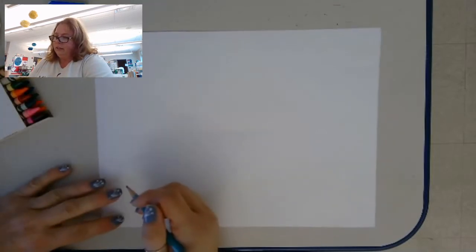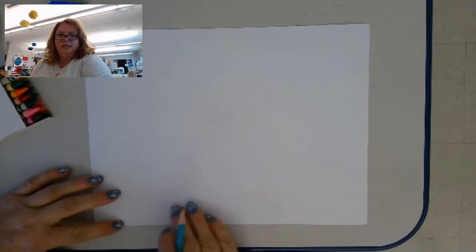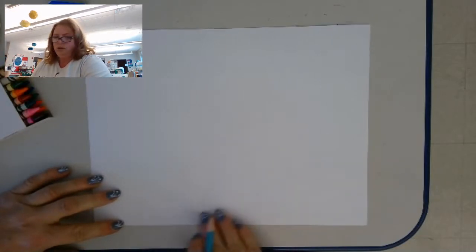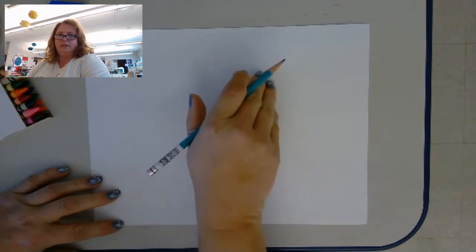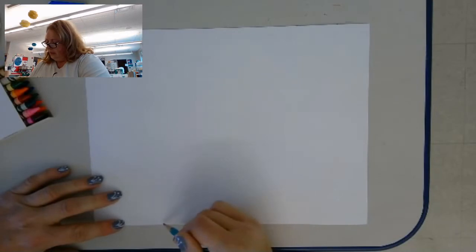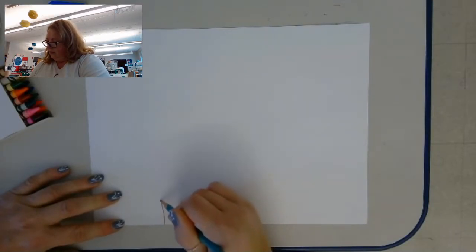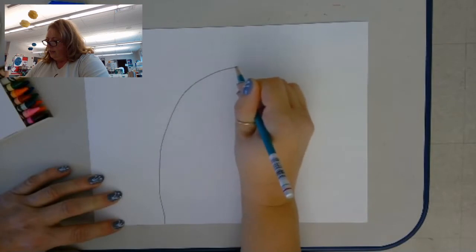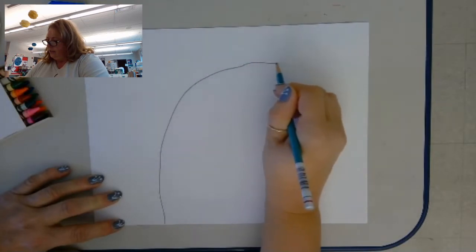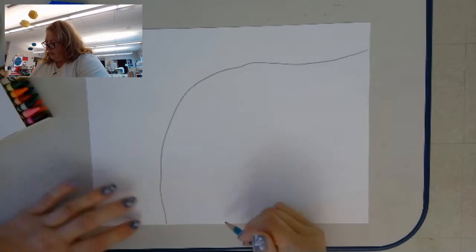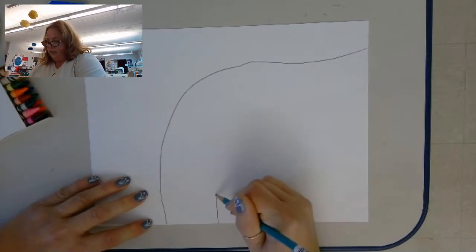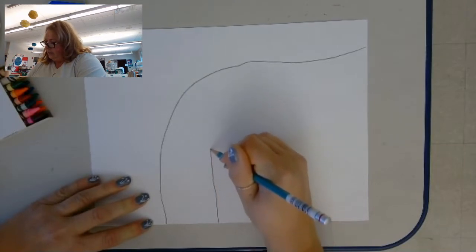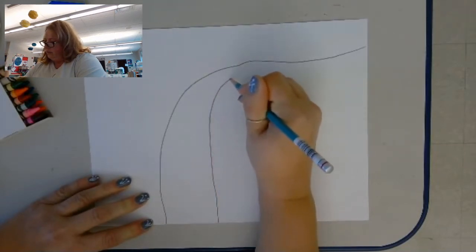So we're going to start with a road and it's going to be wider here because this is the foreground, and it's going to get skinnier as we curve back around. I'm just drawing a line, actually I think I'm going to have it go all the way over here, and then I'm going to have it wide here and then it's going to get skinnier the further along it goes.